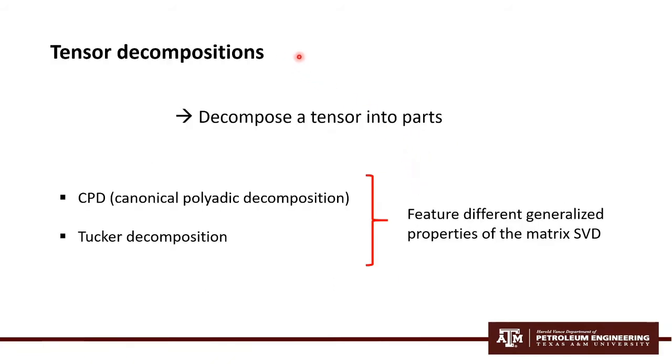A tensor decomposition is essentially a decomposition of a tensor into parts. Two of the most important tensor decompositions are CP, canonical polyadic decomposition, and Tucker decomposition. Many other decomposition techniques can be based on these two principles. It's important to highlight that these methods can be used to obtain hidden information and reduce the size of the model. They feature different generalized properties of the matrix SVD.